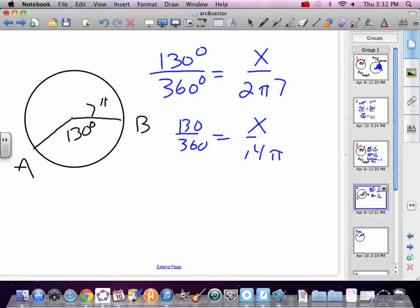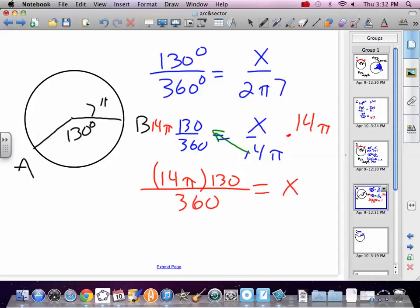Some people just, like I said, some people like thinking about a cross multiply. Some people just want to think about it as getting x by itself. So to get x by itself, we're going to multiply by 14 pi. It's the same thing we did before. We just wrote it differently. We just wrote it with an arrow saying what we were going to do. It's really the same thing. So then you do 14 times pi times 130. Divide that by 360. And that is x. That is the distance from A to B on the circle. Not chord AB, but the distance on the circle.